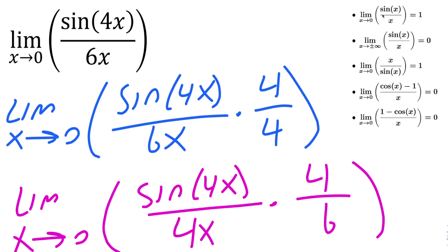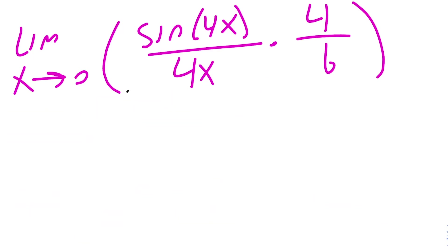Limit of x approaching 0 for sine x divided by x gives us 1. This is the same thing as if you had sine of 4x divided by 4x. And so when you apply the limit of x approaching 0, this piece right here would give us a 1.